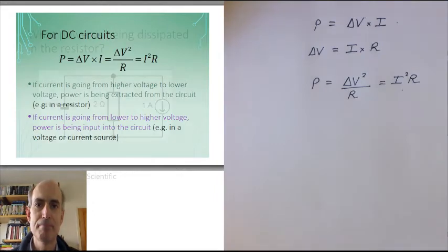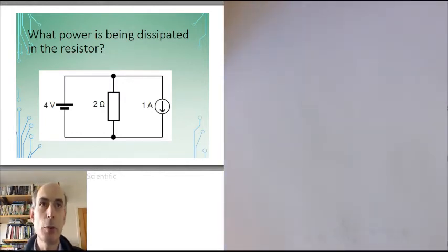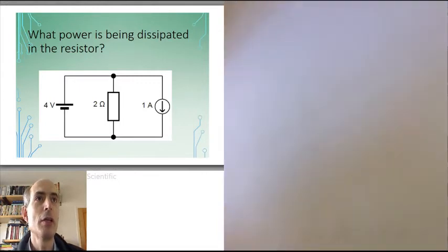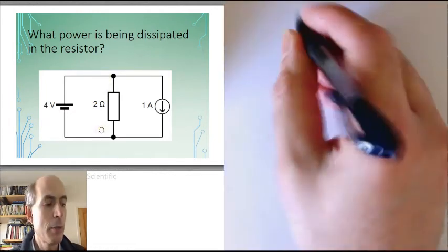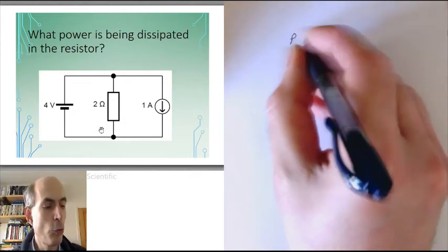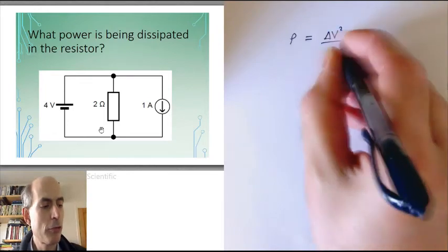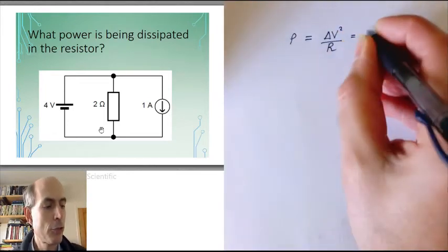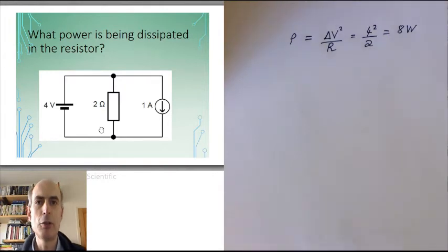Let's do a couple of examples. First example: what power is being dissipated in this resistor? We can quickly see that the voltage across this resistor is just 4 volts, because the voltage source is forcing this point to be 4 volts above this point. So we can immediately use the formula: power equals voltage squared divided by resistance. That gives us 4 squared over 2, which is 8 watts. So there is 8 watts being dissipated in this resistor.